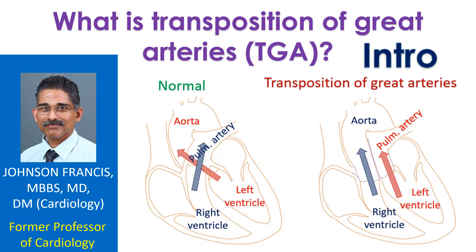Normally, the aorta arises from the left ventricle and pulmonary artery from the right ventricle. In transposition of great arteries, this is reversed so that the aorta arises from the right ventricle and pulmonary artery from the left ventricle.